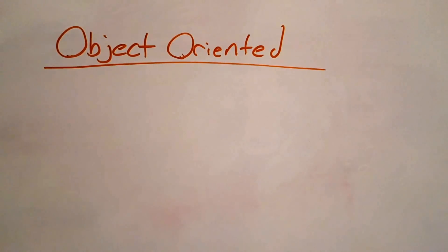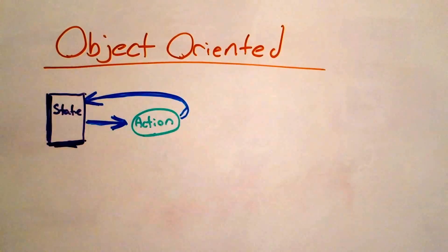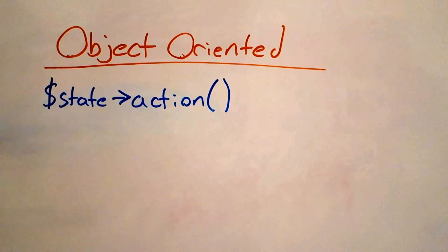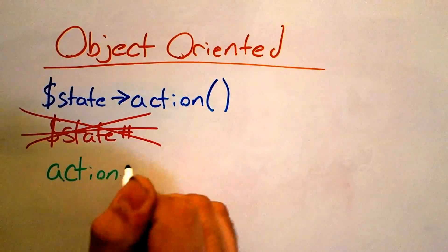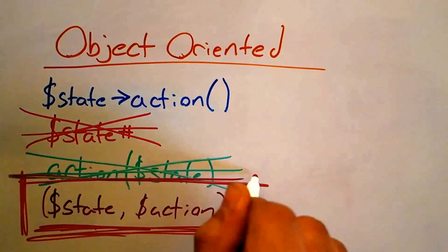With object-oriented code on the other hand, each statement acts upon state. But it doesn't just act upon state, it's also encapsulated by it. The interesting thing is that state and the action are deeply entangled together.